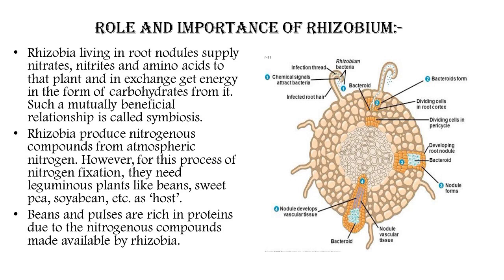Rhizobium produces nitrogenous compounds from atmospheric nitrogen. This process of nitrogen fixation requires leguminous plants as hosts — such as beans, sweet pea, and soybean. Through this exchange, symbiosis benefits both organisms. Beans and pulses are rich in proteins due to the nitrogenous compounds made available by Rhizobium, which is why leguminous plants are rich in protein.